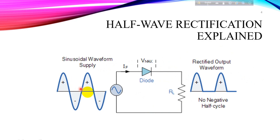Now imagine we want to convert AC to DC using a simple technique known as half wave rectification. In this process we use a component called a diode to allow current to flow in one direction. A diode is a semiconductor device that acts as a one-way valve for electrical current — it allows current to flow from anode to cathode when the anode is at a higher potential than the cathode.